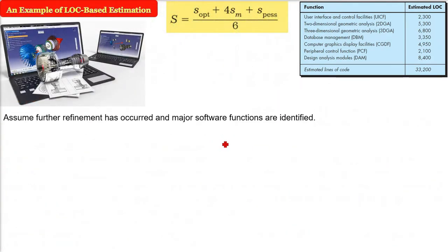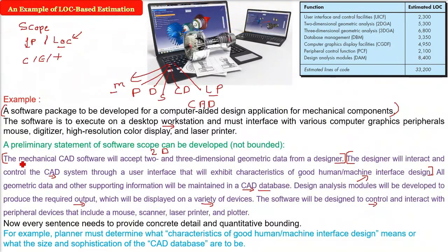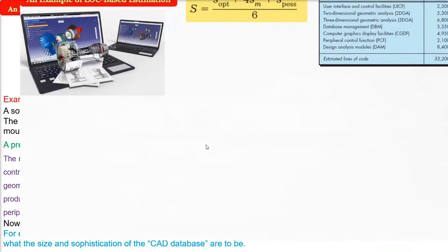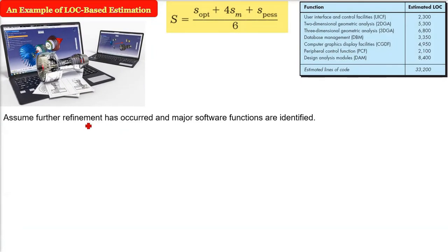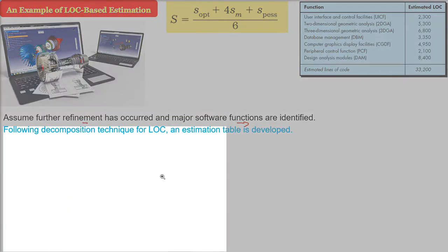Let us assume that this scope, all the sentences have been bounded. We have refined them. We have finally found what are the functions we need to ponder upon, deliberate upon, and then we will make these functions. And these functions will be the basis of the sizing. Scope has already been done, and then refinement to sizing. After further refinement, major software functions are identified.